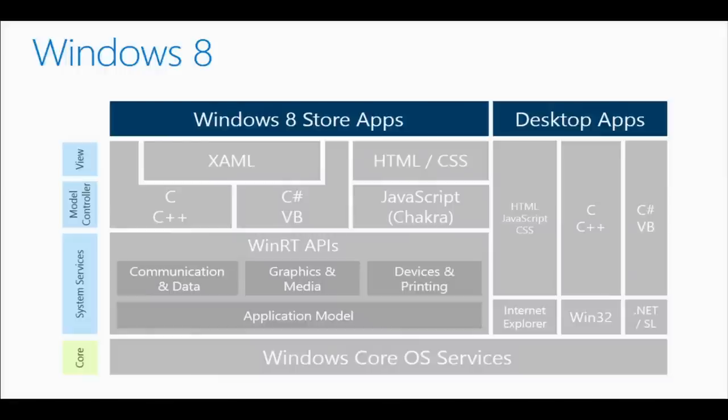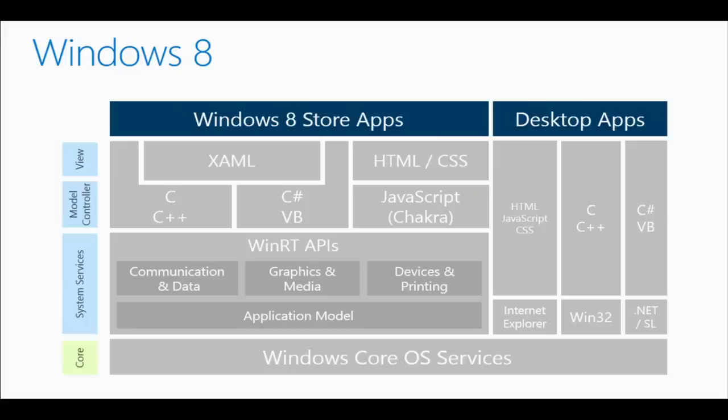This is the overall chart of the technologies you could use to make applications for Windows 8. The stuff on the right — the desktop apps — is really what we already know, the Windows 7 world carried forward: C#, VB, Win32. The new stuff is on the left-hand side — that's Windows Store apps, when you want your application wired into Windows 8 using all those features and get into the store for that really cool Windows Store app experience.